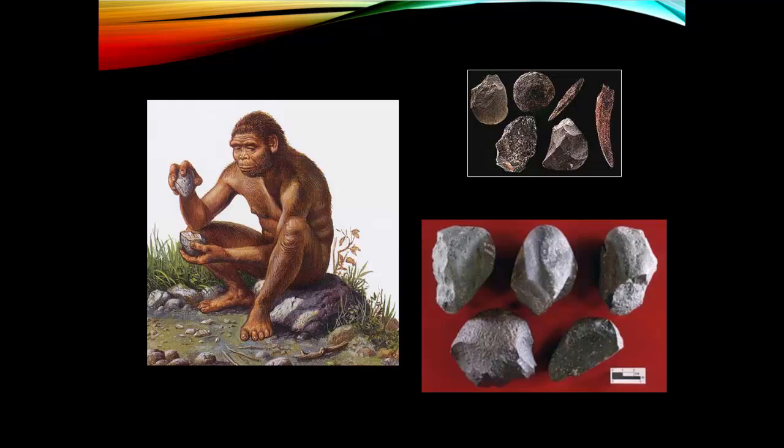In other words, Habilis was much more likely to survive and reproduce. It was in this way that evolutionary selection pressures led to the survival and growth of creatures with increasingly larger brains.